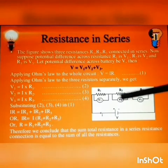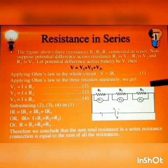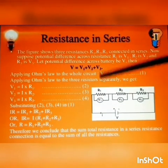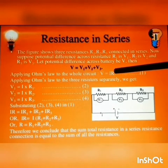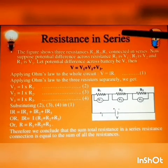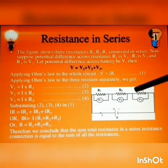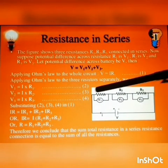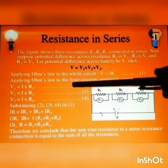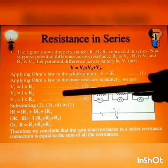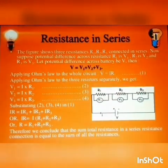In a series connection, the current I remains constant. So by applying Ohm's law, we know V equal to IR. When we apply this Ohm's law across R1, R2 and R3, we get these three equations: V1 equal to IR1, V2 equal to IR2 and V3 equal to IR3.